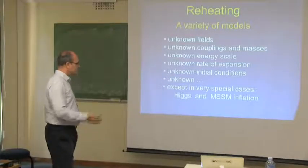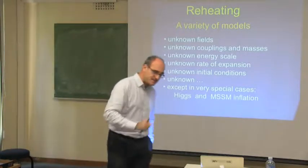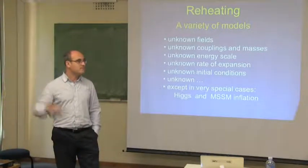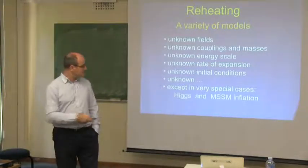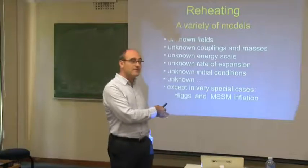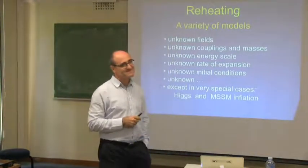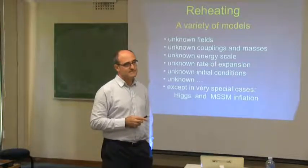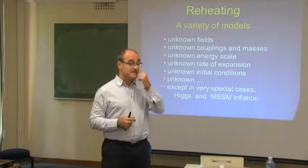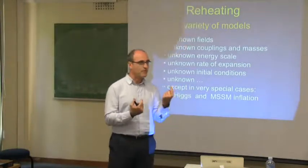MSSM inflation was an idea put out in 2006, where possibly some flat directions protected by supersymmetry might give rise to the right degrees of freedom, which would then be coupled through the superpotential to the rest of the matter. But the LHC has not found anything to match, and some of those particles should have been seen and have not been seen. The question is: is it possible to have an effective theory for reheating? No, I don't think it is. The problem is that it's extremely varied — you could go case by case. For instance, parametric resonance and tachyonic preheating are completely different. There's no effective description that would be universal.